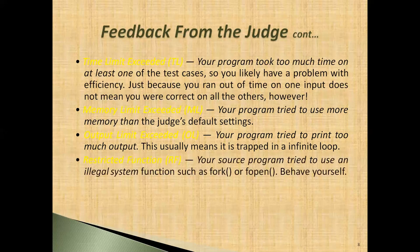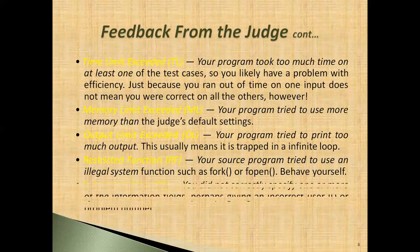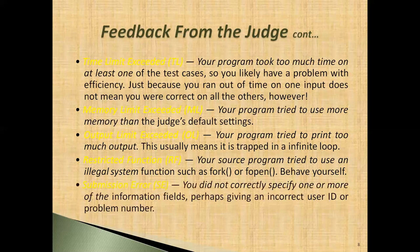Restricted Functions, abbreviated as RF: your source program tried to use an illegal system function such as fork or open. Submission Error: this is the last feedback from the judge — you did not correctly specify one or more of the information fields, perhaps giving an incorrect user ID or problem number.